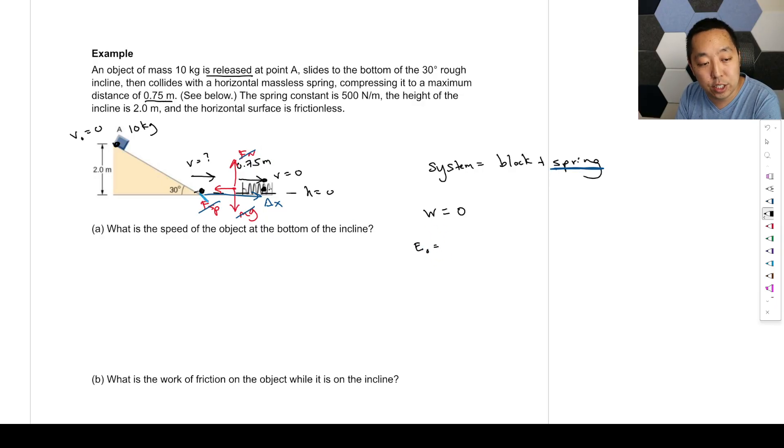Okay, now let's look at the initial energy, the energy here. Now, because it's the block and the spring, we're only including kinetic energy and spring potential energy. So it has some kinetic energy. Does it have any spring potential energy? Well, the spring is not compressed at this point. So no, this is the only energy it has.